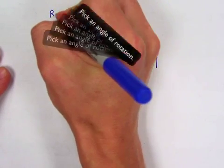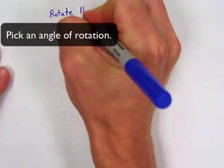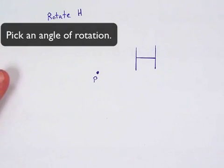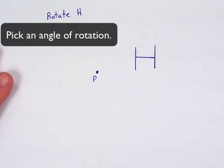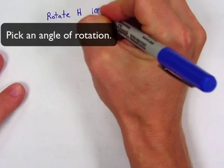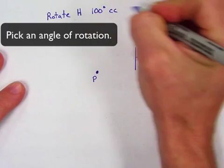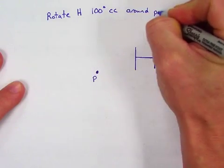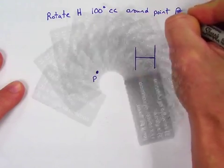And let's rotate our H. How many degrees counter-clockwise? A hundred. A hundred degrees? Let's do a hundred degrees counter-clockwise around point P.